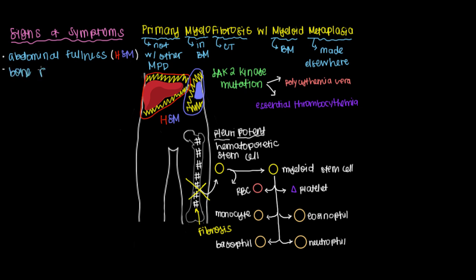You can also get bone pain because rapid fibrosis in the bone marrow will impinge on the nerves there. And then beyond that, we can start to think about what happens when we're lacking the cells we should be making in the bone marrow.